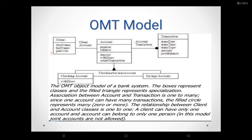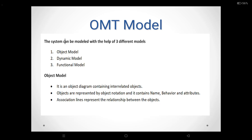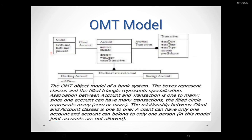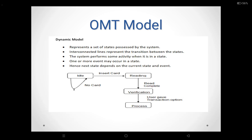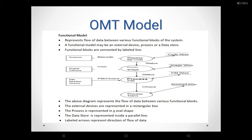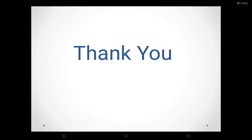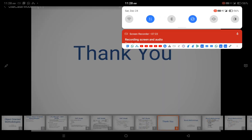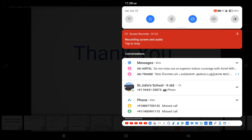The object modeling technique consists of three models: the object model shows the relationship between objects, the dynamic model shows the set of states, and the functional model shows the flow of data. Thank you, students. We will discuss the next topic in the next class. Thank you.